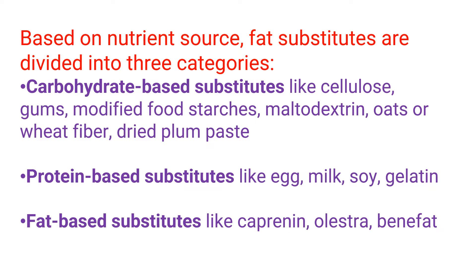Based on the nutrient source, fat substitutes are divided into three basic categories. The first one is carbohydrate-based substitutes, like cellulose, gums, modified food starches, maltodextrins, oats or wheat fibers, and dried plum paste.